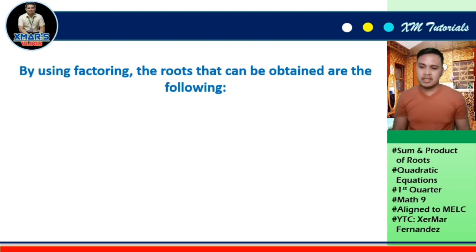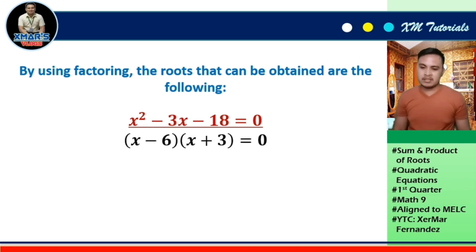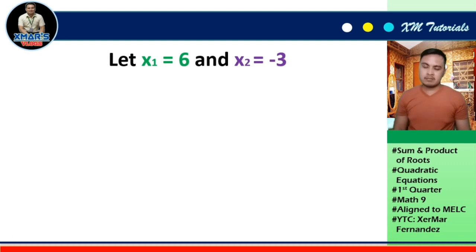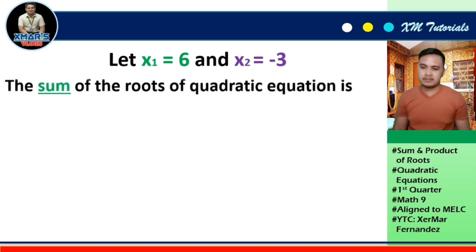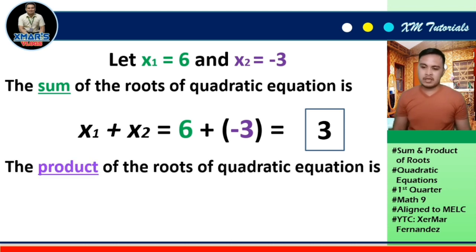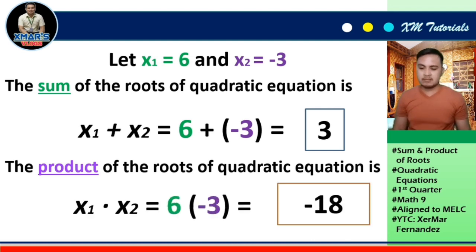Verifying by factoring: x² - 3x - 18 = 0 factors as (x - 6)(x + 3) = 0. Setting each factor to 0: x - 6 = 0 gives x₁ = 6, and x + 3 = 0 gives x₂ = -3. Sum: x₁ + x₂ = 6 + (-3) = 3. Product: x₁ × x₂ = 6 × (-3) = -18. This confirms our earlier results.